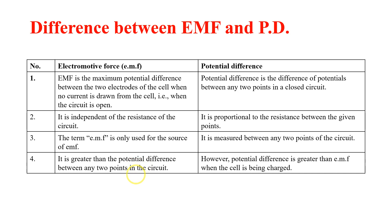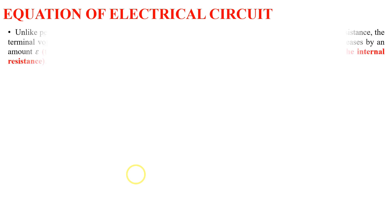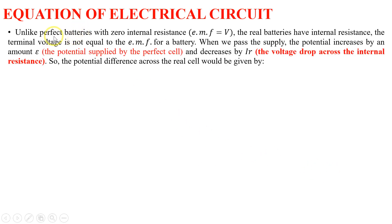Now, equations of electrical circuits. Unlike perfect batteries — which have zero internal resistance, meaning EMF equals voltage — real batteries have internal resistance. For perfect batteries, EMF equals voltage. For real batteries, the terminal voltage is not equal to the EMF, so in real life the EMF is not always equal to the voltage.